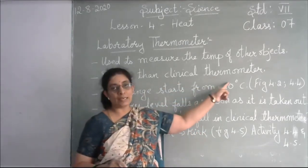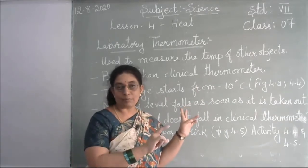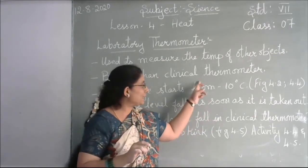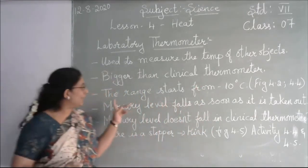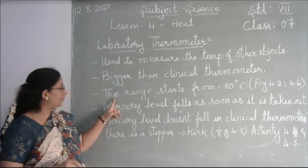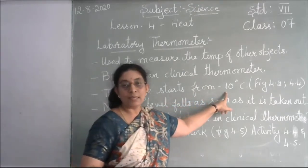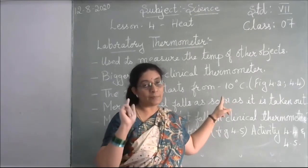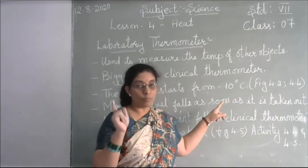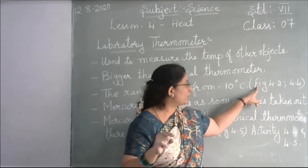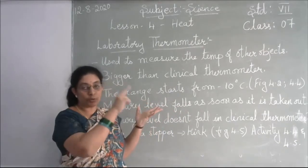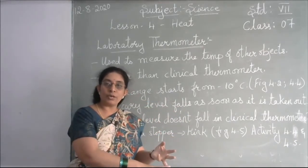The laboratory thermometer is bigger than the clinical thermometer, because the clinical thermometer is medium-sized to fit under a person's tongue. The range of the laboratory thermometer starts from 10 degrees, whereas the clinical thermometer starts from 35 degrees. To see both figures clearly, refer to figures 4.2 and 4.4 in your textbook.